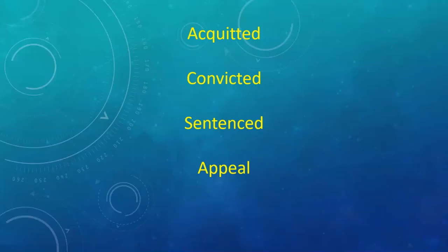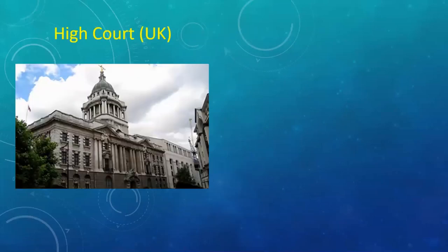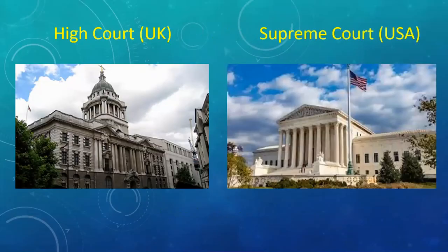If you feel there was something unfair about the trial — there was evidence that was omitted, or things which you believe the jury misunderstood — you may appeal to the Court of Appeal. And ultimately, if there is a case worth taking higher, in the UK you may take your case to the High Court, or in America the Supreme Court, but only if it really has something new to show the judges.